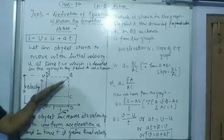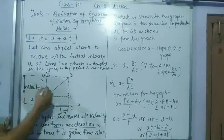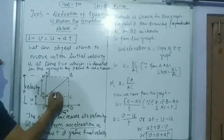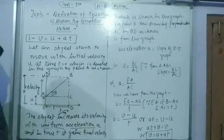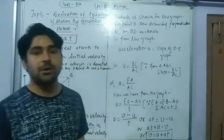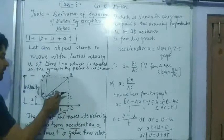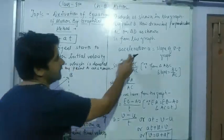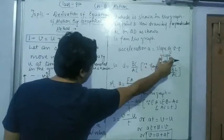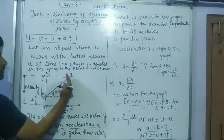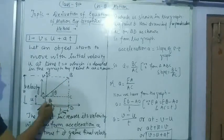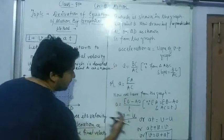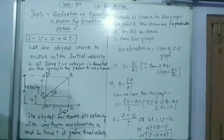यह equation हमारी इस तरीके से drive होगी — first equation of motion। Slope कैसे निकाला जाता है: slope means this angle, और यह angle tan beta से आता है। In class 9th, you have to only remember that acceleration is equal to slope of velocity time graph, which will be equal to perpendicular upon base in this triangle, and you can furthermore calculate like this.